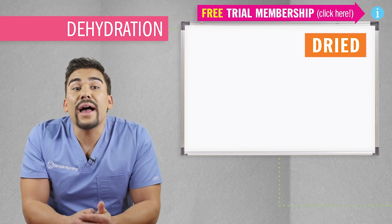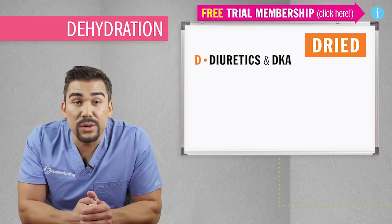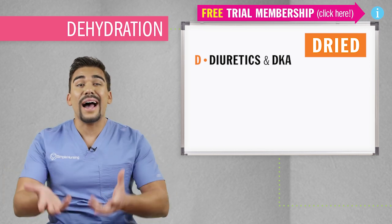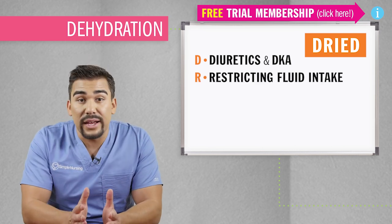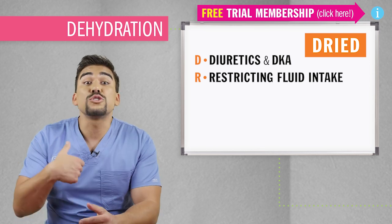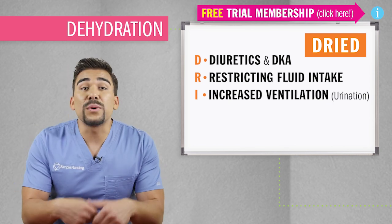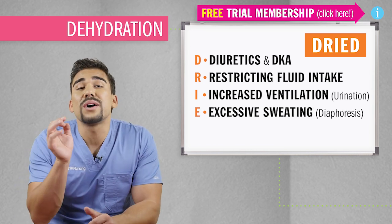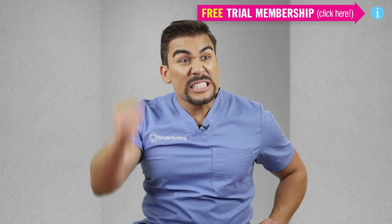We also use our acronym DRIVE. D is for diuretics, but also diabetic ketoacidosis — water leaves the body usually because of polyuria, as the body tries to pee out that high concentration of thick sugar inside the bloodstream. R is for restriction of fluid intake, normally when patients don't take in enough fluids — usually with our elderly populations who don't drink enough water and don't have enough muscle mass to hold the water they do intake. I is for increased ventilation, also called hyperventilation. E is for excessive sweating, also called diaphoresis. And the second D is for diabetes insipidus, also known as DI.